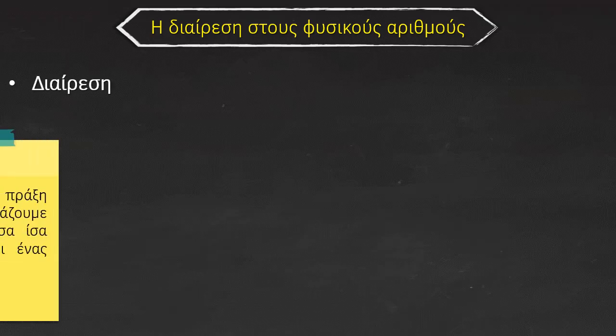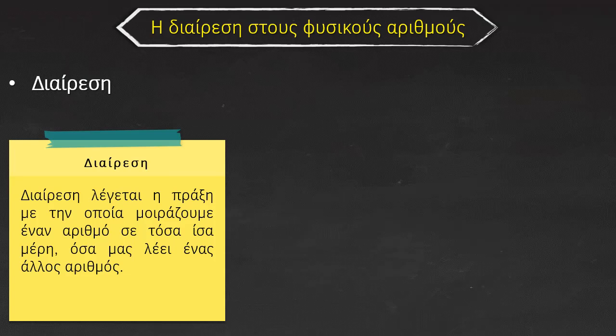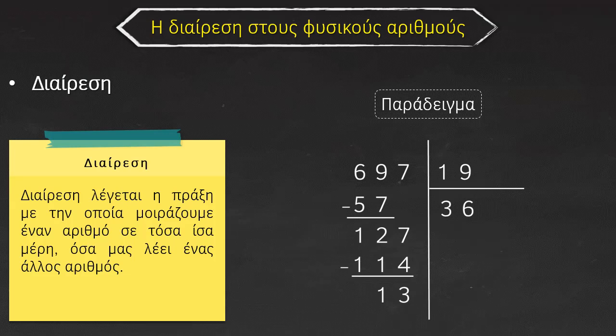Η διαίρεση στους φυσικούς αριθμούς. Διαίρεση λέγεται η πράξη με την οποία μοιράζουμε έναν αριθμό σε τόσα ίσα μέρη όσα μας λέει ένας άλλος αριθμός. Παράδειγμα, εδώ το 697 το μοιράσαμε σε 19 μέρη.